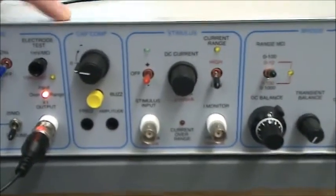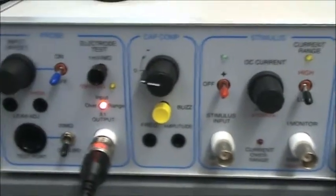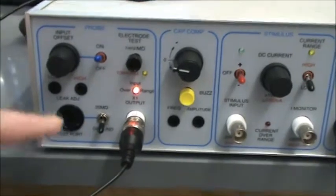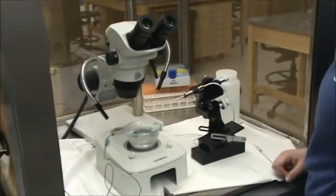So for the capacity compensation, we want this set to zero. The probe will be on and we'll have that set to ground.